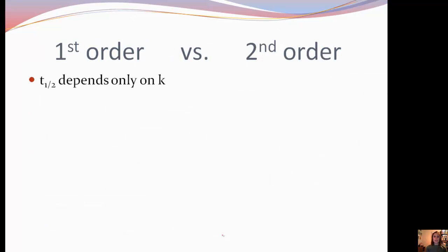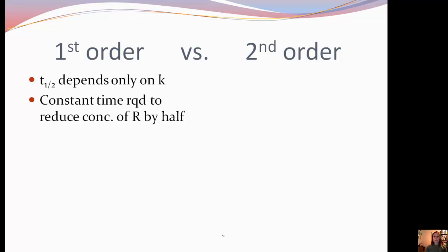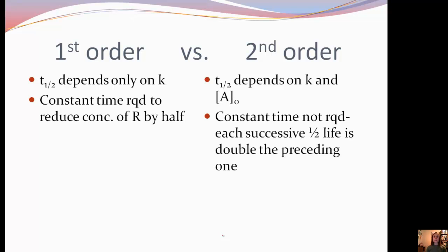Let's look at some differences in half-life for first-order versus second-order. For first order, half-life depends only on k, and a constant time is required to reduce the concentration by half — so if you start with an amount and after 100 seconds you have half, after 100 more seconds you'll have half of that. Second order depends on k and the initial concentration, and the constant time is not required — each successive half-life actually doubles. So if it takes 100 seconds for the first half, it takes 200 seconds for the next.